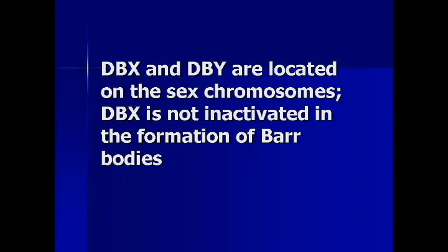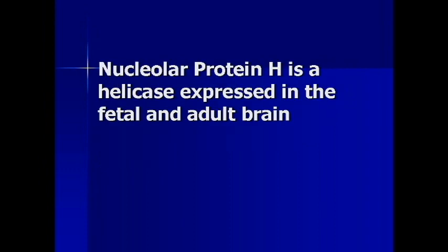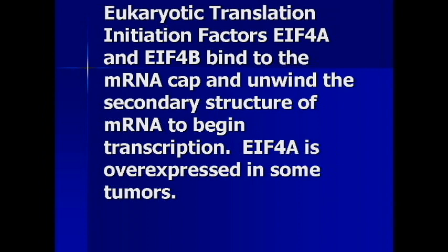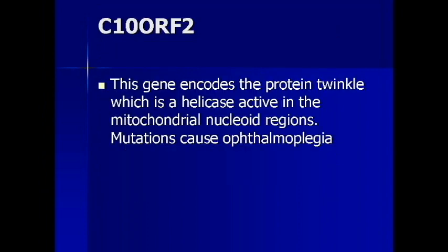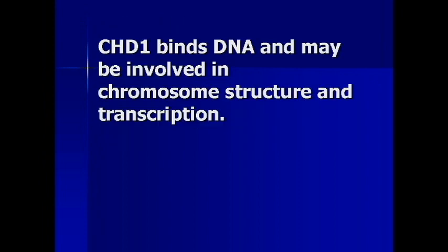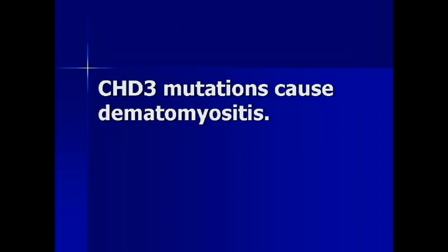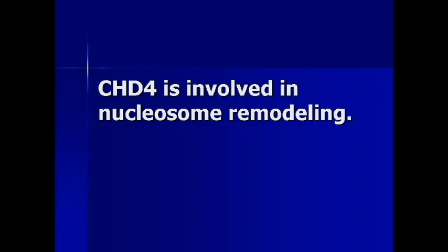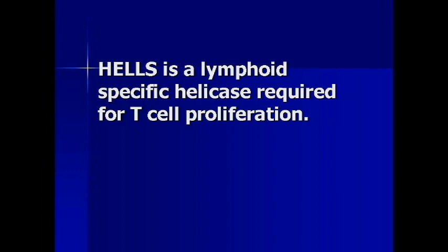This gene family also includes the REC-Q-like family, which unwinds DNA; the DEAD box (D-E-A-D box) RNA helicases, which can unwind RNA regions and act as splicing factors; and eukaryotic translation initiation factors.